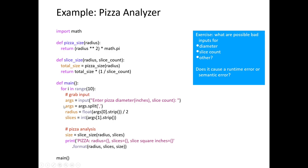We grab values at index zero and index one from the list. The strip command removes extra spaces. Then we convert the diameter string to a floating-point number and divide by two to get the radius from the diameter. Slices is similar — we get the second argument, strip spaces, and convert to an integer. Then the pizza analysis section calls slice_size with the radius and slice count, stores it in size, and prints the result.